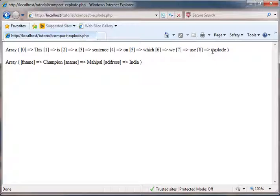In the other case, we have an associative array. Here it is: fname is associated with 'Champion', sname is associated with 'Mahipal', and address is associated with 'India'.